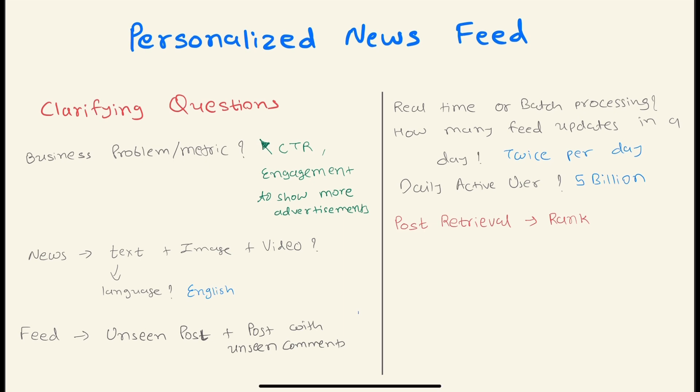First things first, we ask clarifying questions to the interviewer. First, what's the business problem we're trying to solve? We would like to improve engagement for the users, and if that increases then we can show multiple ads in between and retain the users.